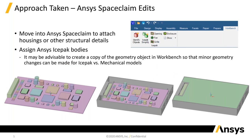We take the ANSYS SHERLOCK-created model and move it into ANSYS SPACE CLAIM. Inside of ANSYS SPACE CLAIM, we can identify objects or use the ICEPAK simplify button to identify ICEPAK geometries and make simplifications for ANSYS ICEPAK. The mechanical models and the ANSYS ICEPAK models should be similar, and they do map to one another automatically, pretty much.